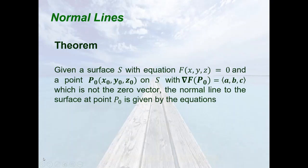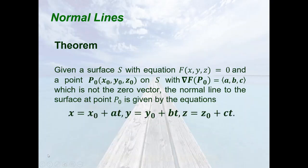Hence, we have this theorem. Given a surface S with equation f(x, y, z) = 0, and a point (x₀, y₀, z₀) on S with the gradient of f at p₀ equal to the vector (a, b, c), which is not the zero vector, then the normal line to the surface at p₀ is given by: x = x₀ + at, y = y₀ + bt, z = z₀ + ct. To determine the parametric equations of this line, we need the point p₀ and the gradient of f at p₀, which gives the direction of the line.